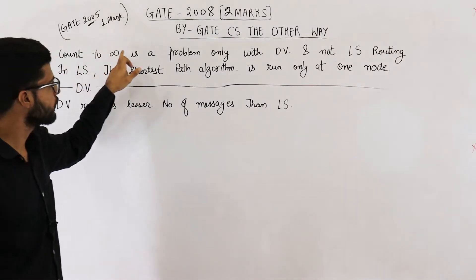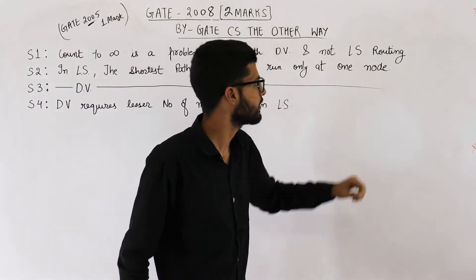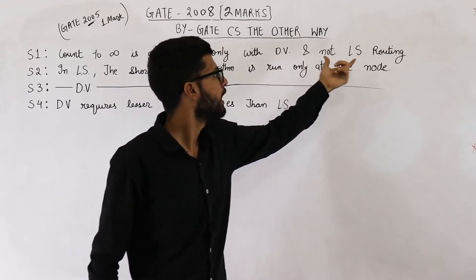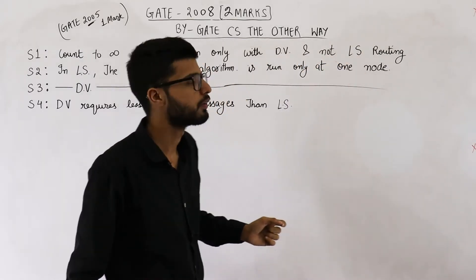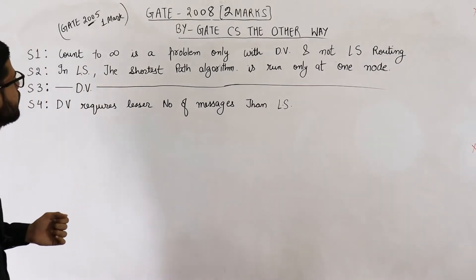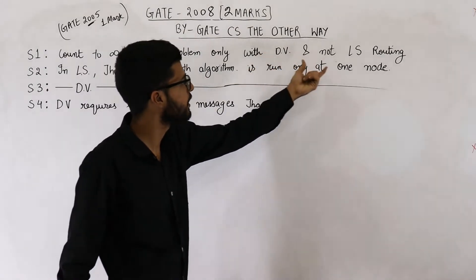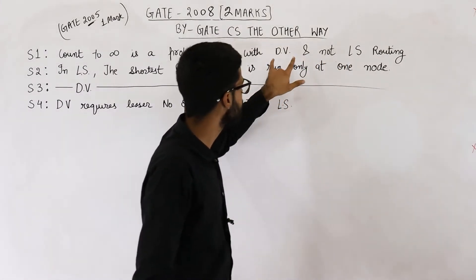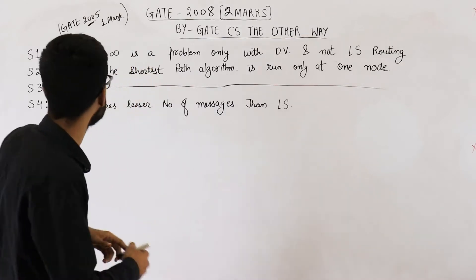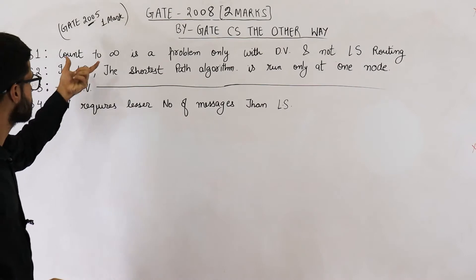Statement number one says: count to infinity is a problem only with DV and not with LS routing. DV obviously means distance vector routing, LS means link state routing. You need to tell if the statement is true or false. This statement is actually true. We have already seen both of these algorithms and we have seen that DV has a problem that is called count to infinity.